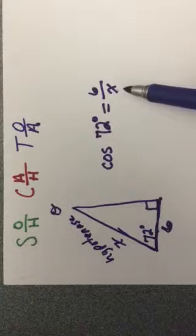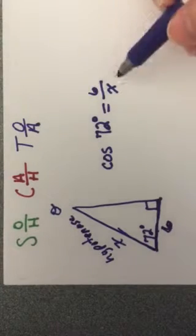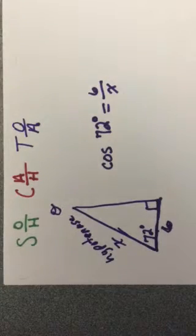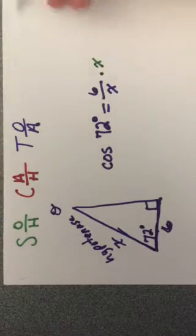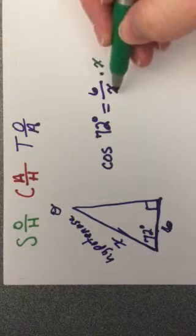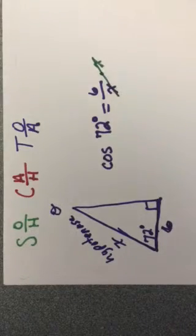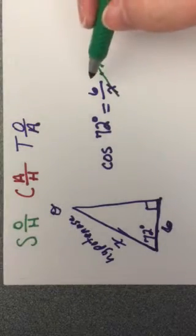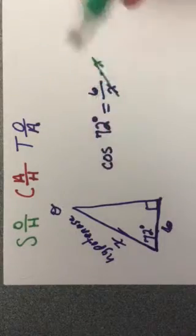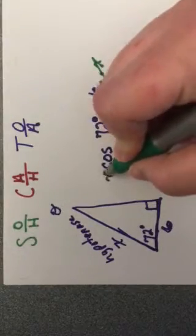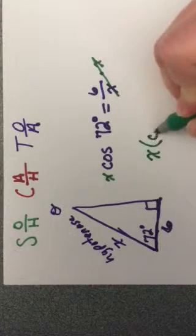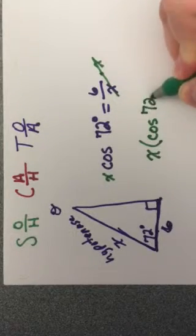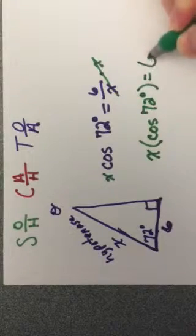We're going to use our algebra skills here to get this x out of the denominator. I'm going to multiply by x. That gives me 6x over x. It eliminates my x's. What you do to one side, you got to do to the other. So I'm going to multiply this side over here by x.